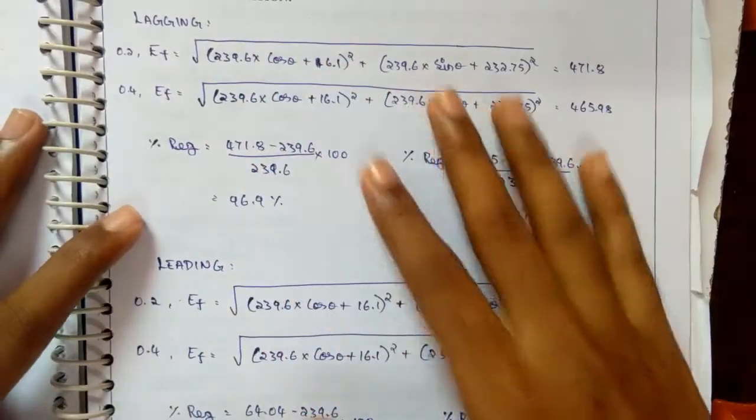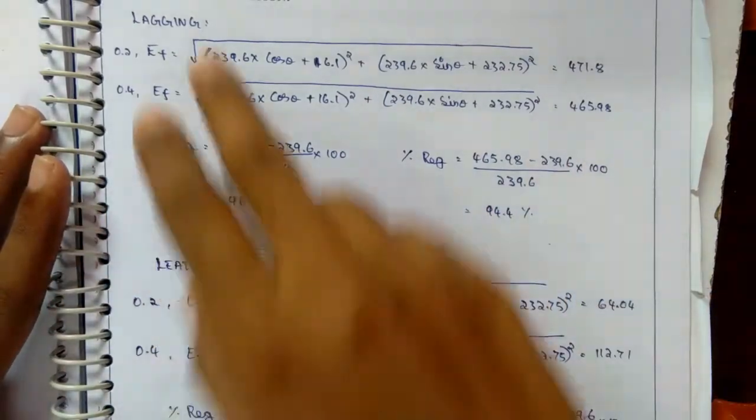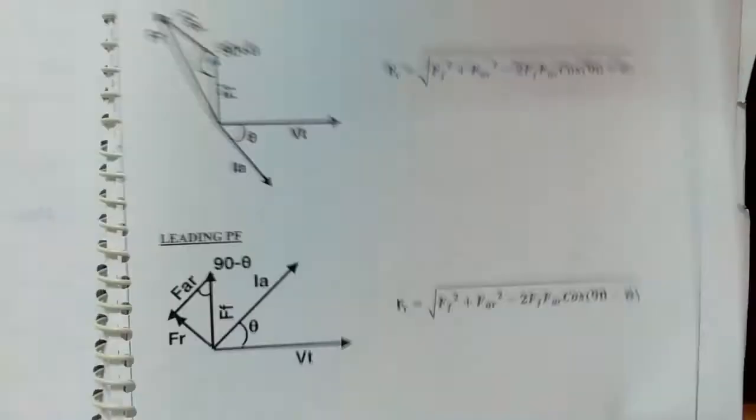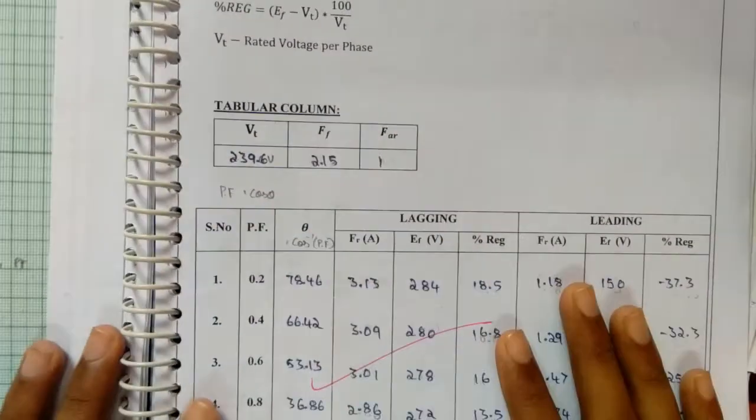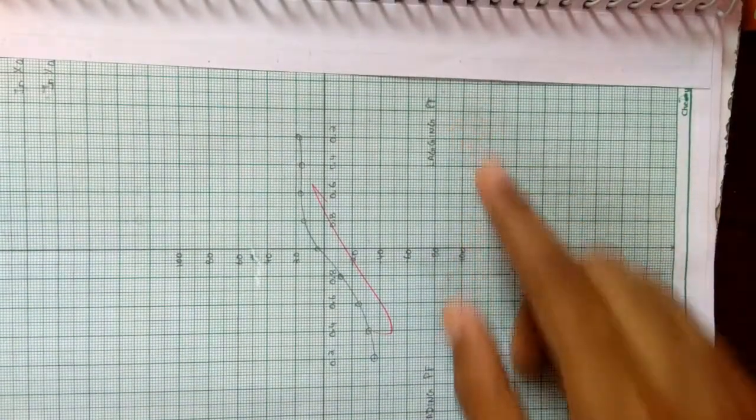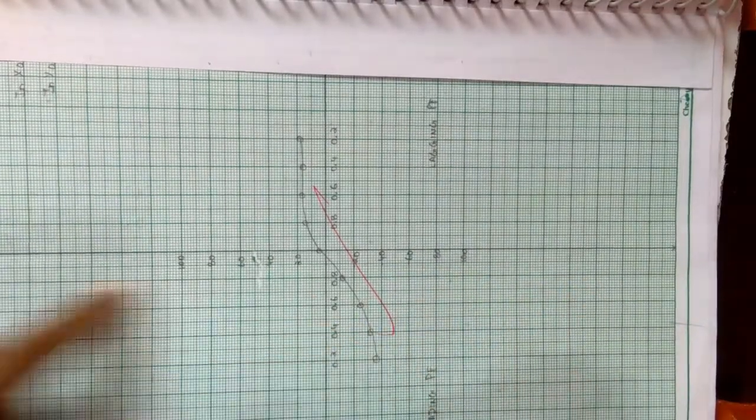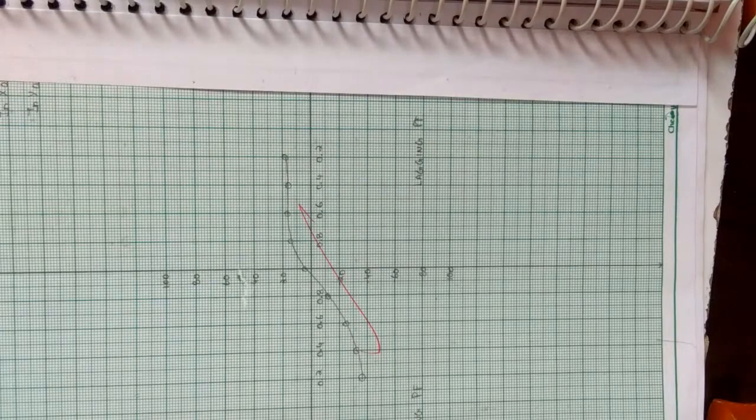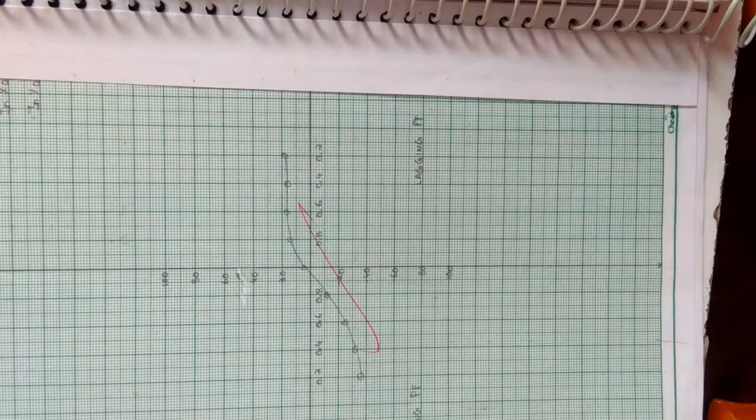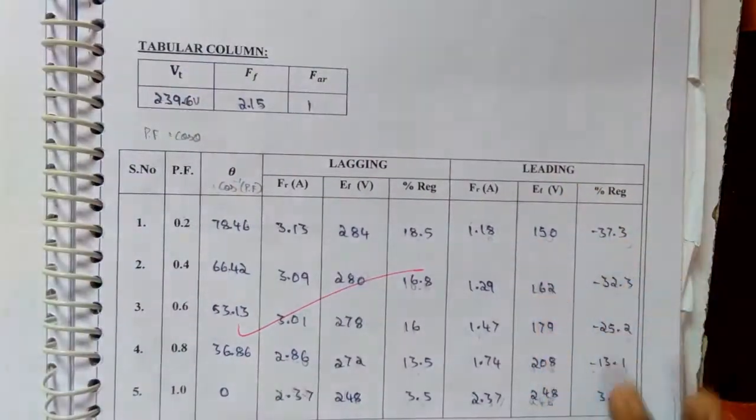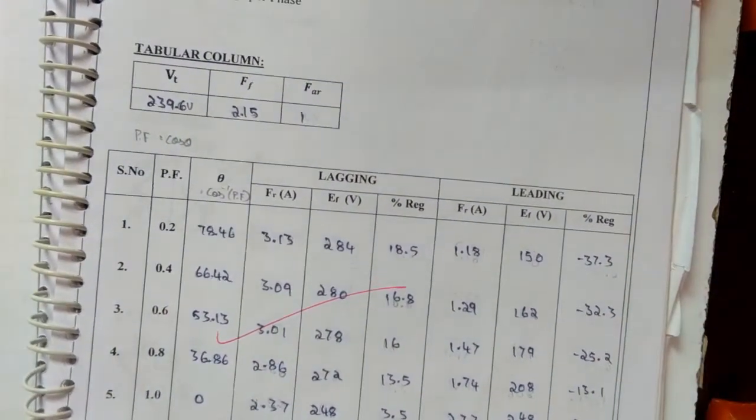I will show only two values for the model calculation. For lagging and leading, with this value we are going to draw a graph for leading and lagging power factor with the percentage regulation in the Y axis. After drawing this graph with the help of this tabular column value, the experiment is over. Thank you.